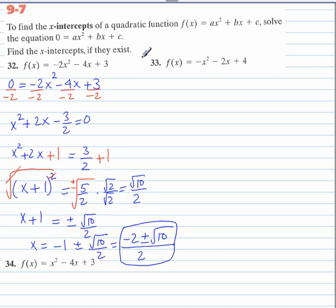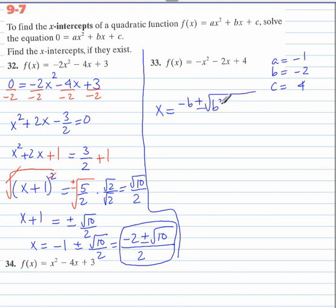Now let's do number 33. We'll do that one by using the quadratic formula. Let's identify A, B, and C. It's a good habit to get into so we won't make a mistake when solving. x equals negative b plus or minus square root of b squared minus 4ac all over 2a. It's good to memorize it with that song, that music.